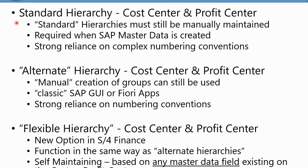The most common hierarchy that you need to have in the system — and it's mandatory — is the standard hierarchy. For cost centers and profit centers, a standard hierarchy must still be manually maintained, and this is required when SAP master data is created. There's often a strong reliance on complex numbering conventions or certain ranges of cost centers or profit centers in order to make the standard hierarchy easier to maintain, but it's still a manual process mandatory to successfully create a cost center or profit center master record.